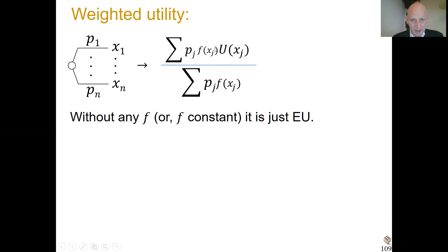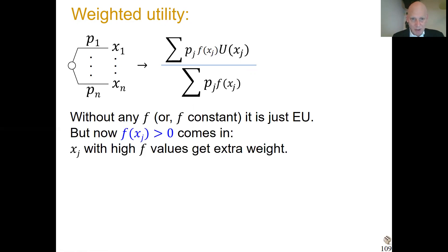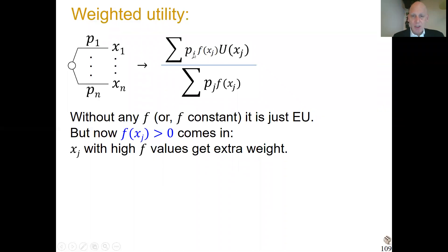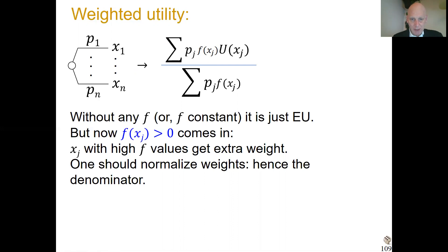As I already said, if there were no f, or if f is constant, then it would be expected utility. But f need not be constant — it's positive. You can use f to give higher weight to some outcomes than to other outcomes in this convex combination. That's how you can generalize.